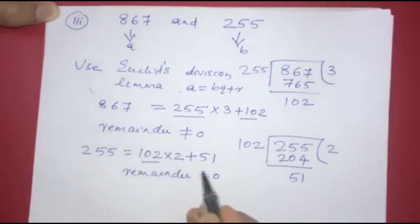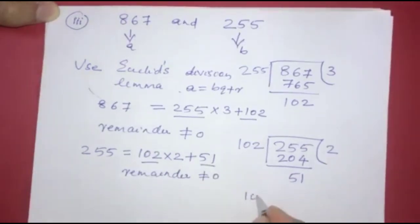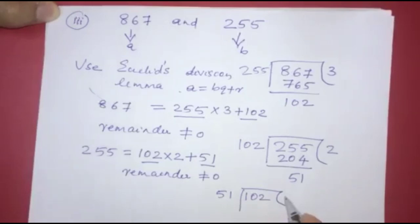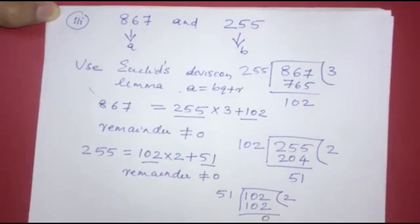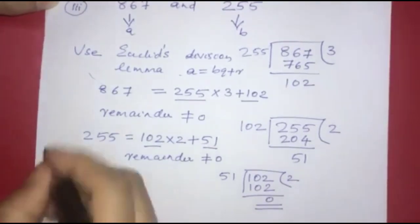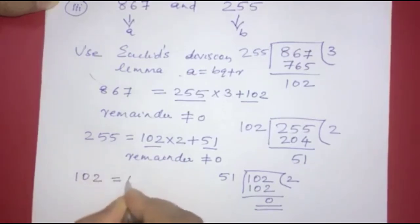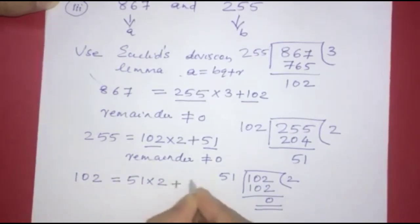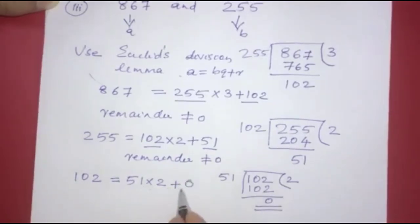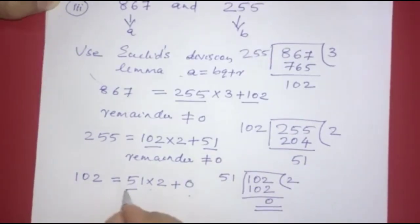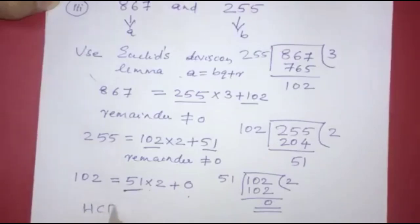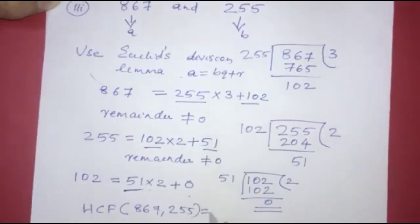Since remainder 51 is not equal to zero, we apply Euclid's division lemma again with 102 and 51. We get 102 is equal to 51 into 2 plus remainder 0. The remainder is 0, so the HCF of 867 and 255 is 51.